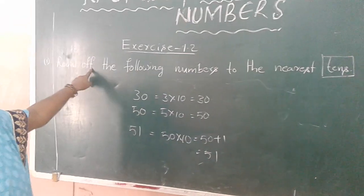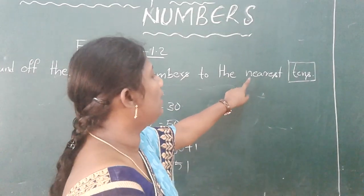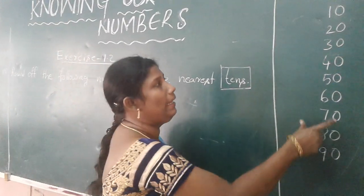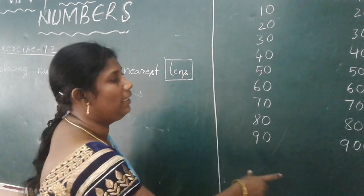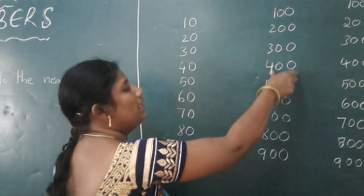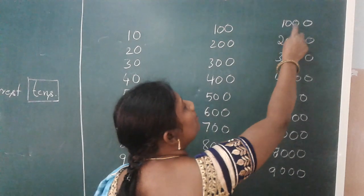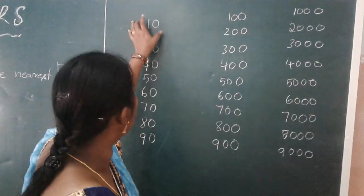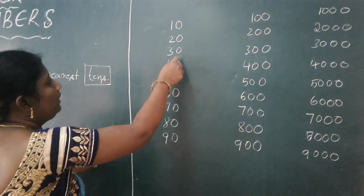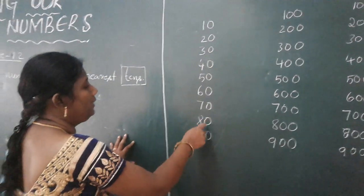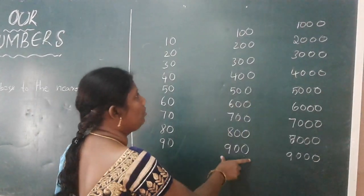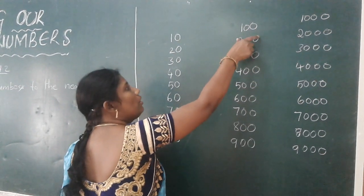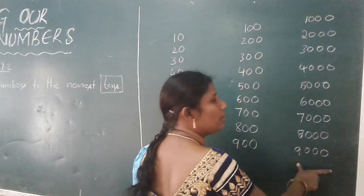Round off the following numbers to the nearest tens. A number with a single zero is a tens number. A number with two zeros is a hundreds number. A number with three zeros is a thousands number.